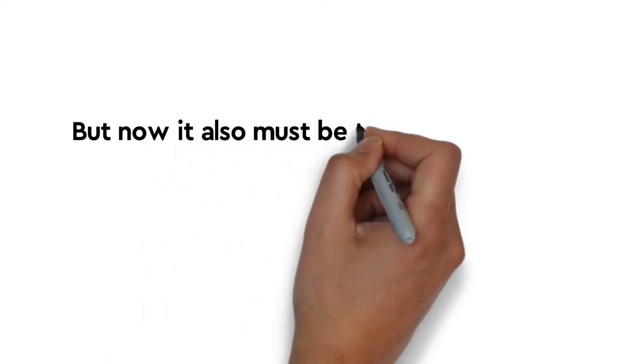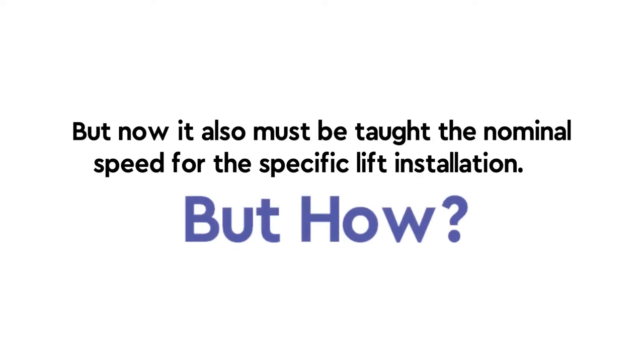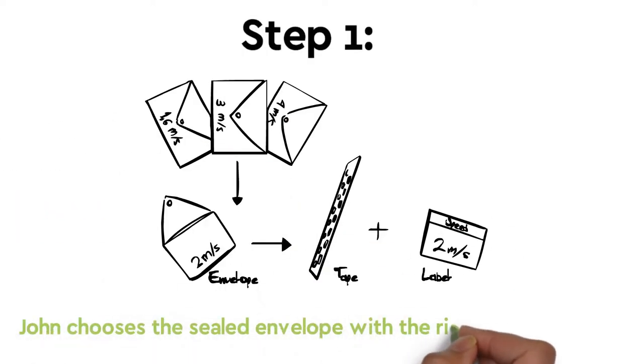But now it also must be taught the nominal speed for the specific lift installation. But how? Step 1: John chooses the sealed envelope with the rights being labelled.